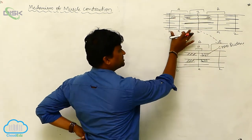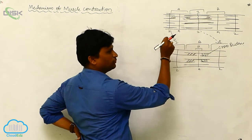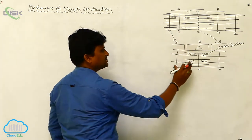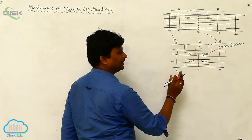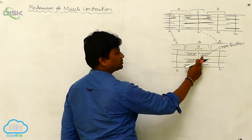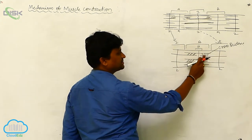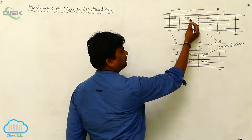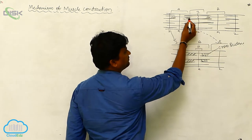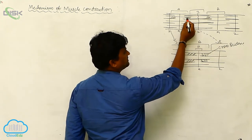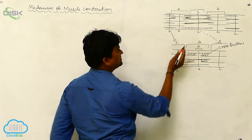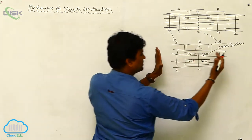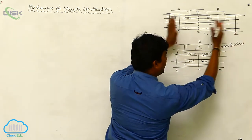What happens during muscle contraction is that the sarcoplasmic reticulum releases calcium ions. Calcium ions and ATP together are involved in the formation of cross bridges to the myosin heads. The myosin heads then bind to the actin filaments, forming a contraction, and the size will be reduced.